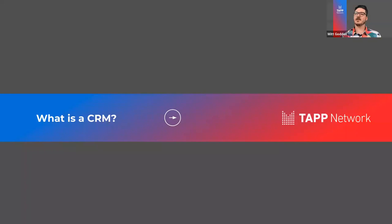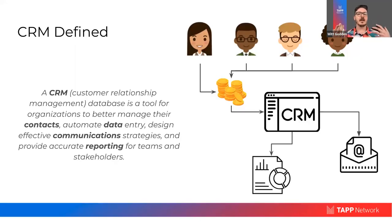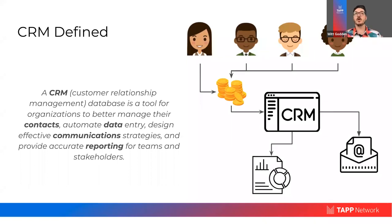So what is a CRM? A CRM stands for Customer Relationship Management — it's a tool or database for organizations to better manage your contacts, automate your data entry, design effective communication strategies, and provide accurate reporting for teams and stakeholders. When someone fills out their information on your site, the CRM is where you store all of that information. Depending on the platform — whether it's MailChimp, Salesforce, or in this case HubSpot — what you're able to do with that information really depends on the platform you have.